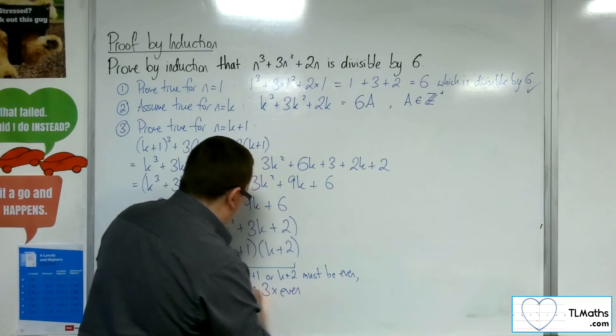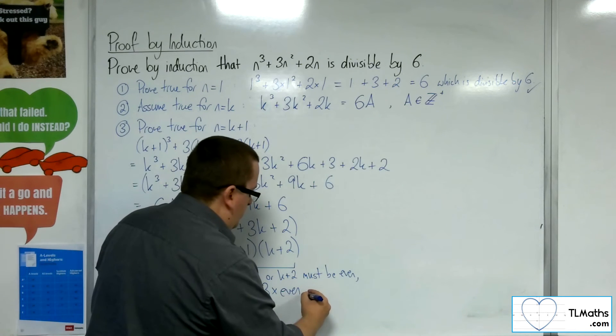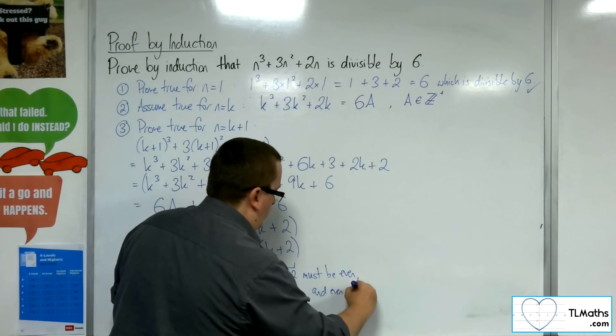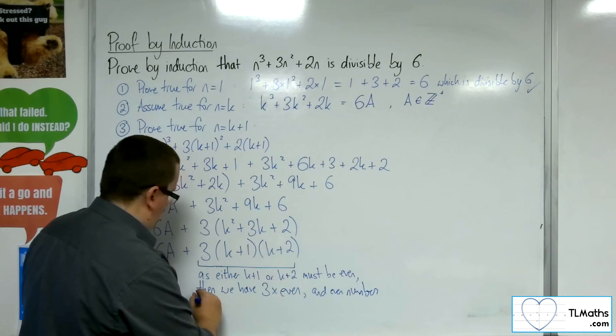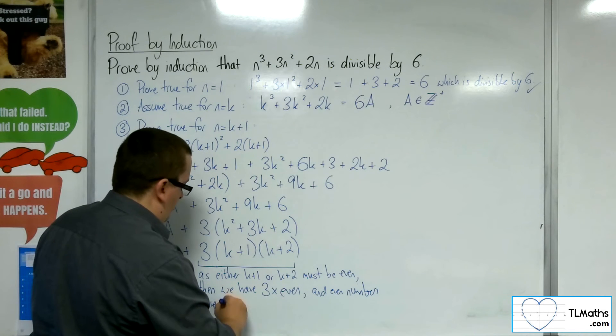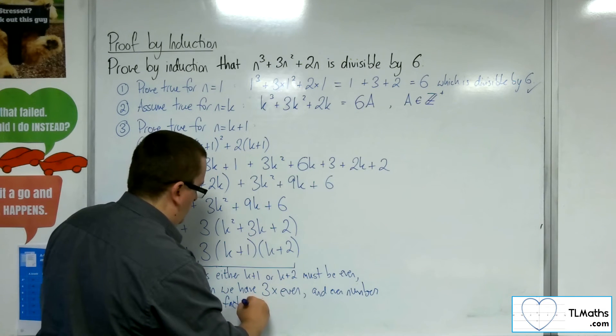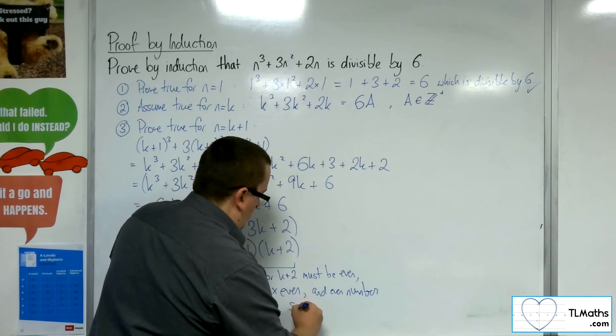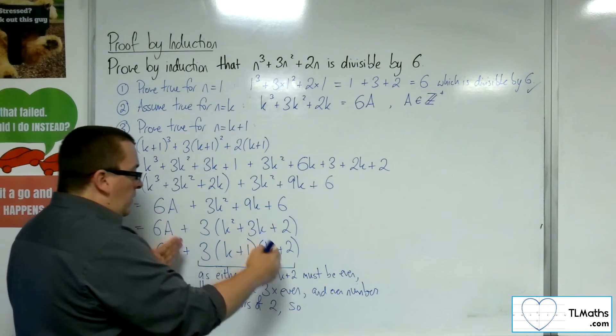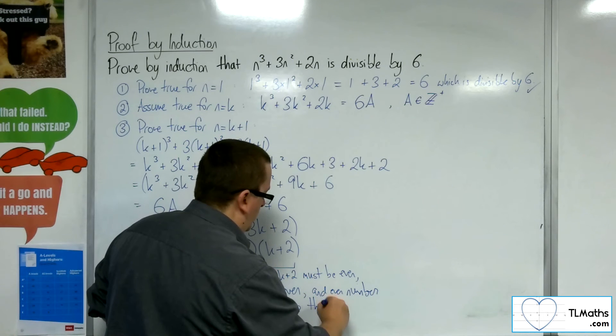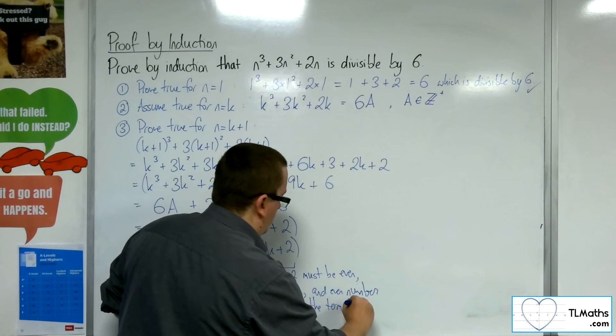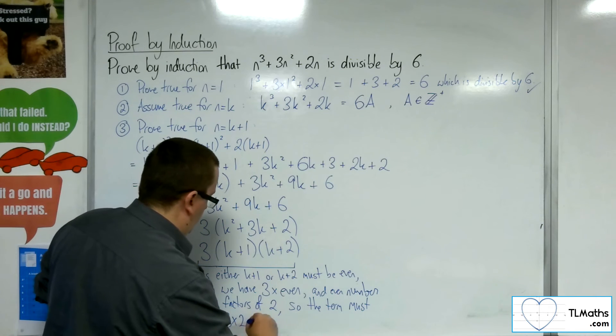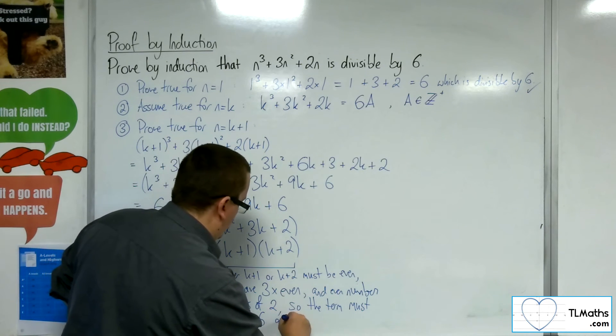And so, then we have 3 times even. And even numbers have factors of 2. So, the term must have 3 times 2, which is 6, as a factor.